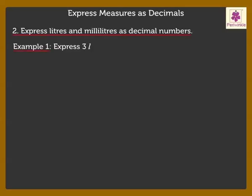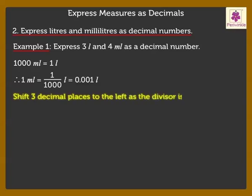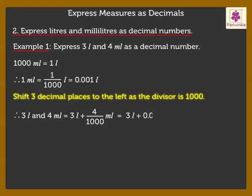Next, let us express liters and milliliters as decimal numbers. Express 3 liters and 4 milliliters as a decimal number. 1000 milliliters is equal to 1 liter. Therefore, 1 milliliter is equal to 1 upon 1000 liter, which is equal to 0.001 liter. We shift three decimal places to the left as the divisor is 1000. Hence, 3 liters and 4 milliliters is equal to 3 liters plus 4 upon 1000 liters, which is equal to 3 liters plus 0.004 liters, which is equal to 3.004 liters.